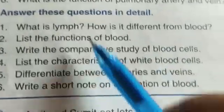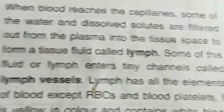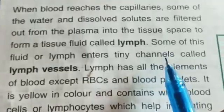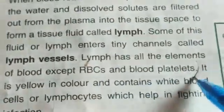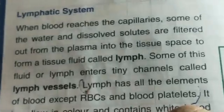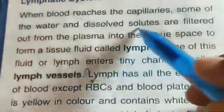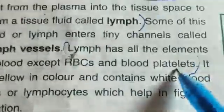What is lymph, and how is it different from blood? Lymph is a tissue fluid. Lymph has all the elements of the blood except red blood cells and blood platelets — that is how it is different from blood. When blood reaches the capillaries, some of the water and dissolved solutes are filtered out from the plasma into the tissue space to form a tissue fluid called lymph.